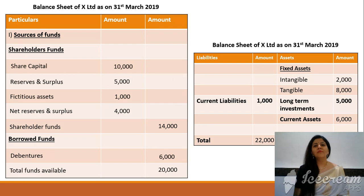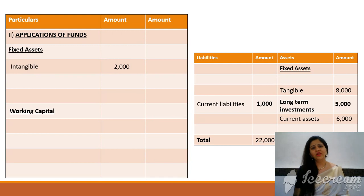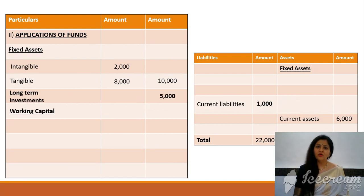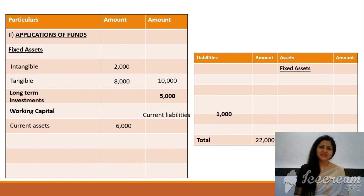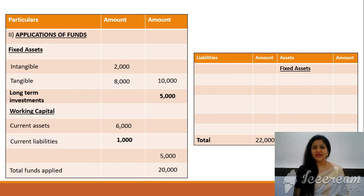Now let's see how we utilize these funds — the second part of the balance sheet, which is application of funds. Where have we utilized the funds? First is fixed assets — it can be intangible fixed assets like goodwill, patents, copyrights, or tangible fixed assets like machinery, building, computers, etc. When we add intangible and tangible fixed assets we get total fixed assets. The second application of funds could be long-term investments. The third would be working capital — short-term capital required for running the business. Working capital is calculated as current assets minus current liabilities. When we add fixed assets, long-term investments, and working capital, we get total funds applied — and obviously total funds applied should tally with total funds available.